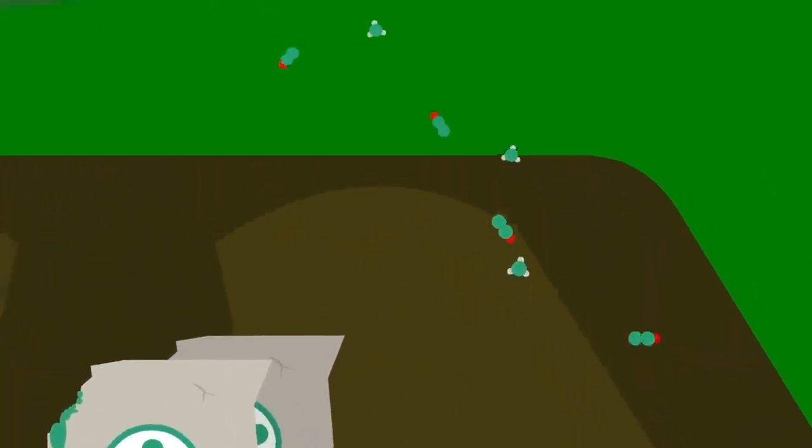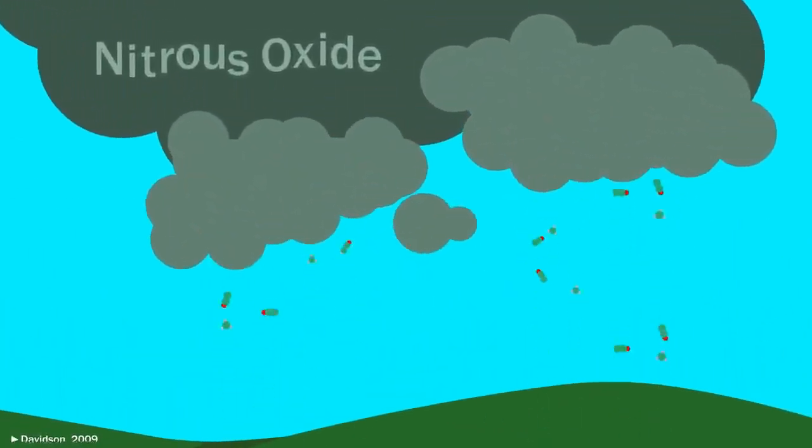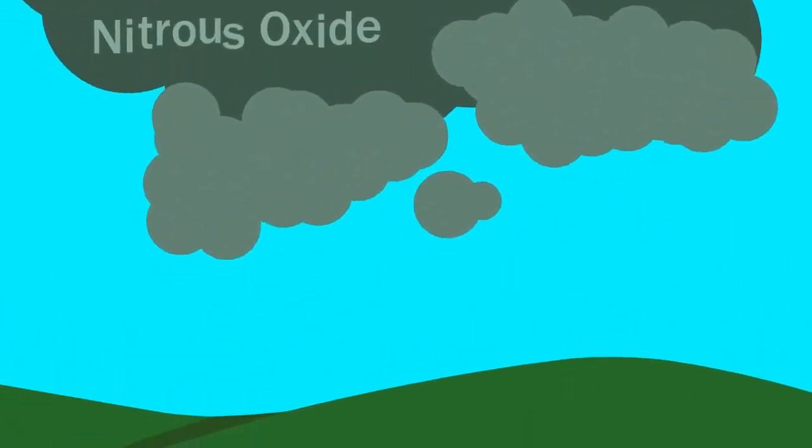Loose nitrogen molecules are also much more prone to volatilization, releasing huge amounts of nitrous oxide, a potent greenhouse gas, into the atmosphere.